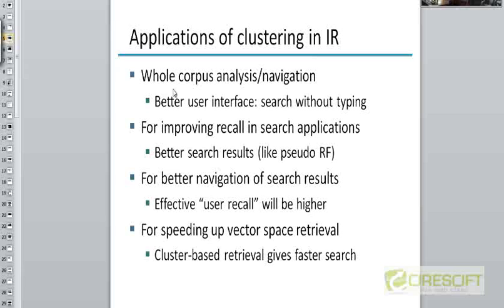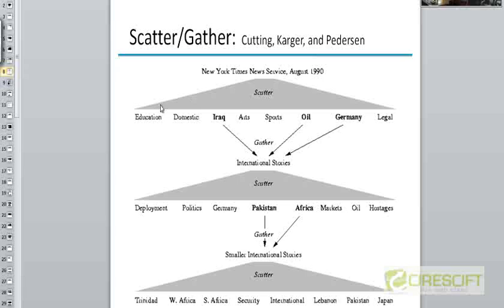Let's look at some specific applications of clustering to web data mining in particular. One application is what's known as whole corpus analysis or navigation. This is probably best described through an example. This is not something you find in a search engine — more appropriately, you can think of this application of clustering as being part of a browse engine.